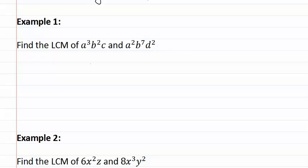Let's start by writing down all of the unique factors. There's an a, a b, a c, and a d. Now step two, we need to find the highest exponent of each of these.